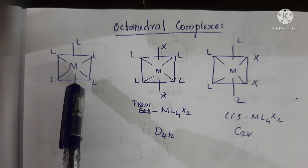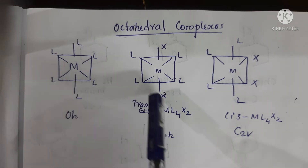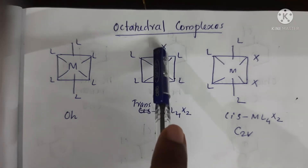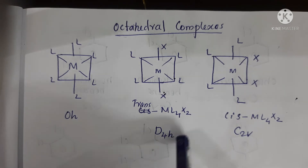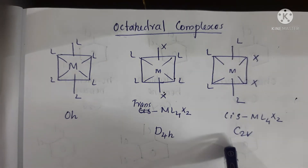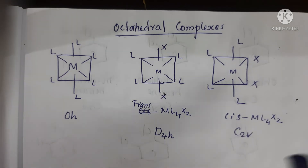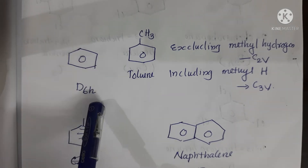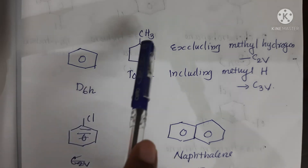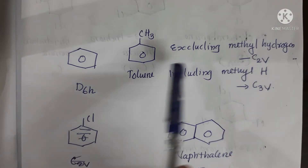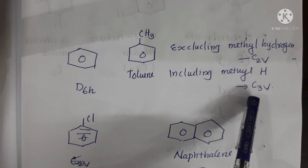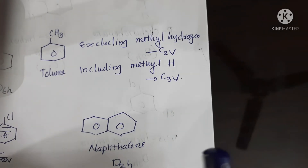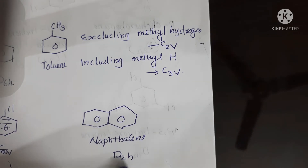For octahedral complex point groups: trans-ML4X2 is D4H and cis-ML4X2 is C2V point group. Benzene is D6H. Toluene excluding methyl hydrogens is C2V, and including methyl hydrogens it is C3V. Naphthalene is D2H.